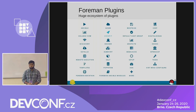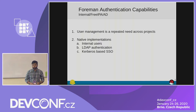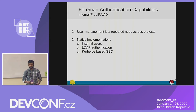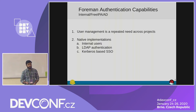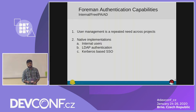What we are going to look at today is Foreman's authentication capabilities. As we all know, user management is a repeated process across all projects, and that's why we also have some native implementations. First is internal users — it does some database queries and gets the user authentication from there. Next is LDAP authentication, which includes FreeIPA and Active Directory with two-factor and OTP-based authentication. And Kerberos-based single sign-on is also available with the existing Foreman.